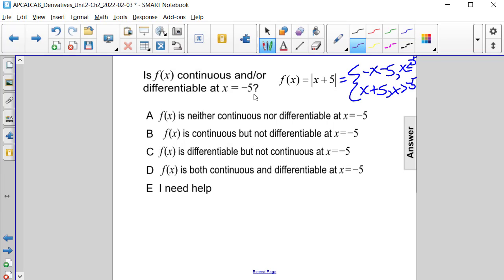So let's work on finding the limit of f of x as x approaches negative 5 from the left first. That's going to be equal to negative of negative 5 or positive 5 minus 5, which is 0. And now we can determine what the limit of f of x as x approaches negative 5 from the right.